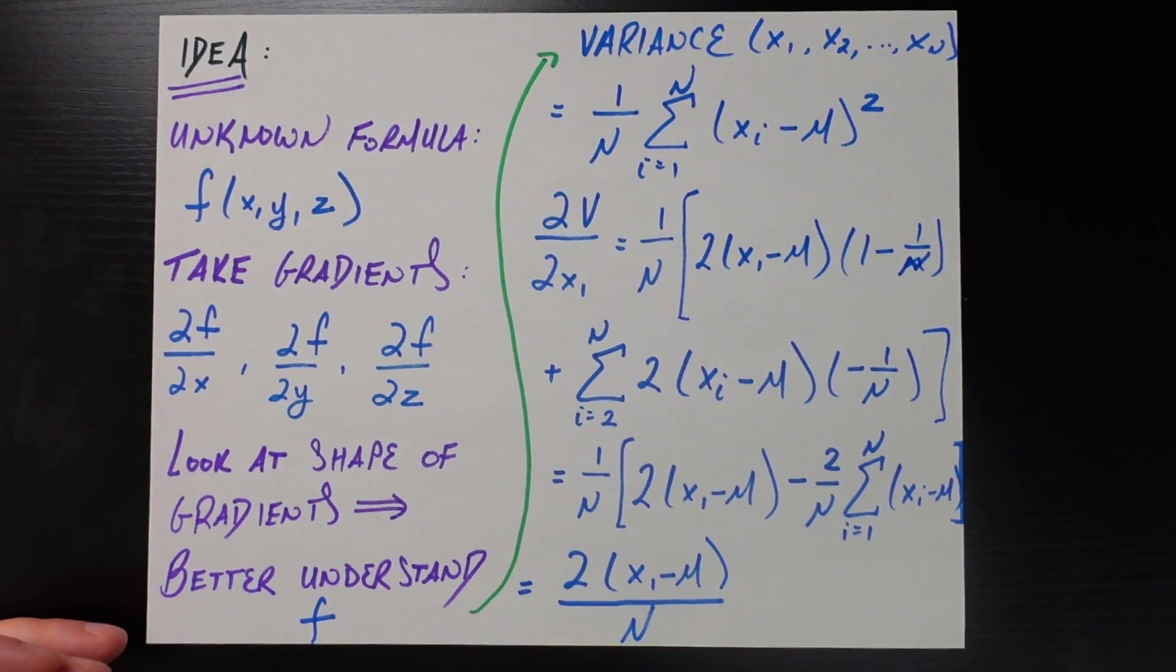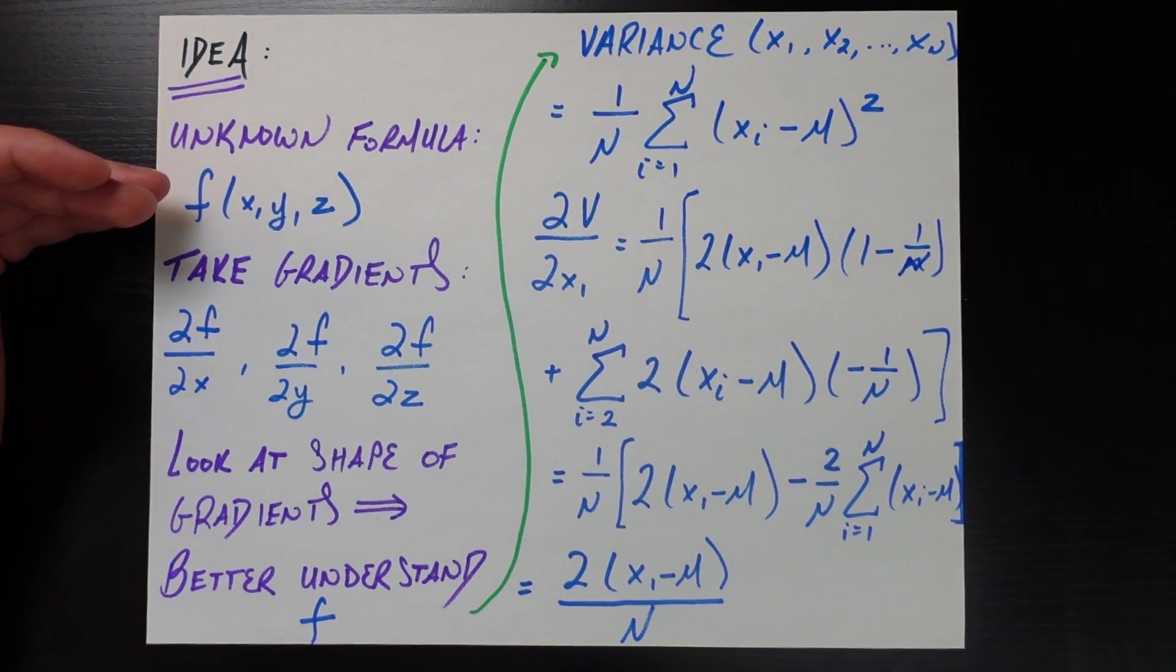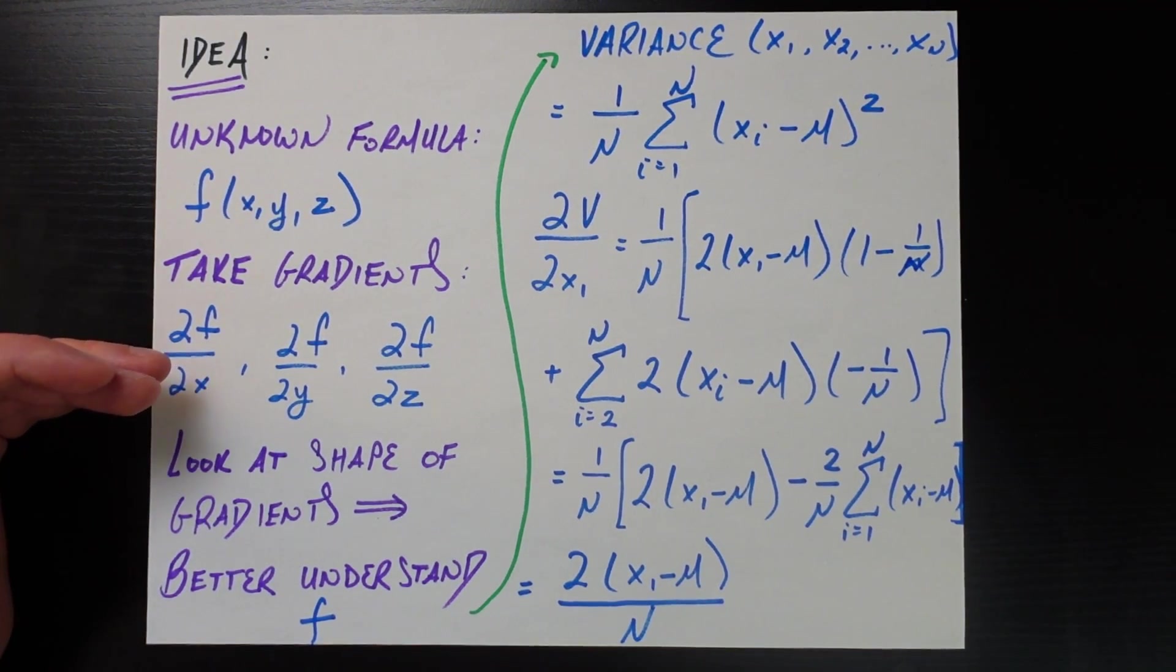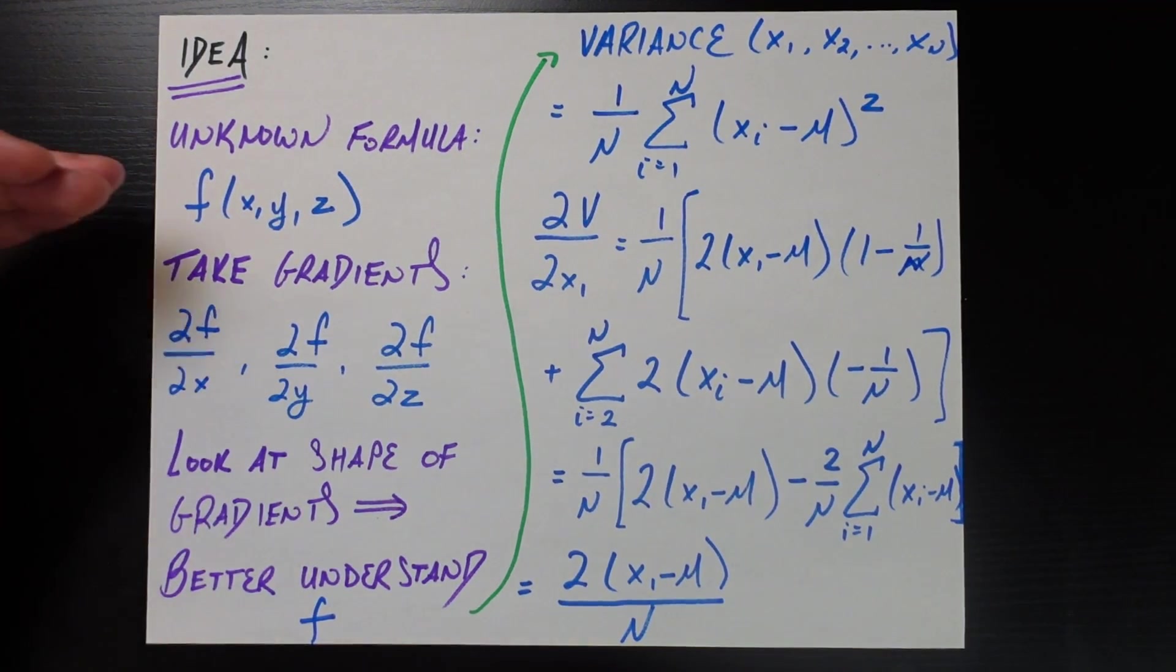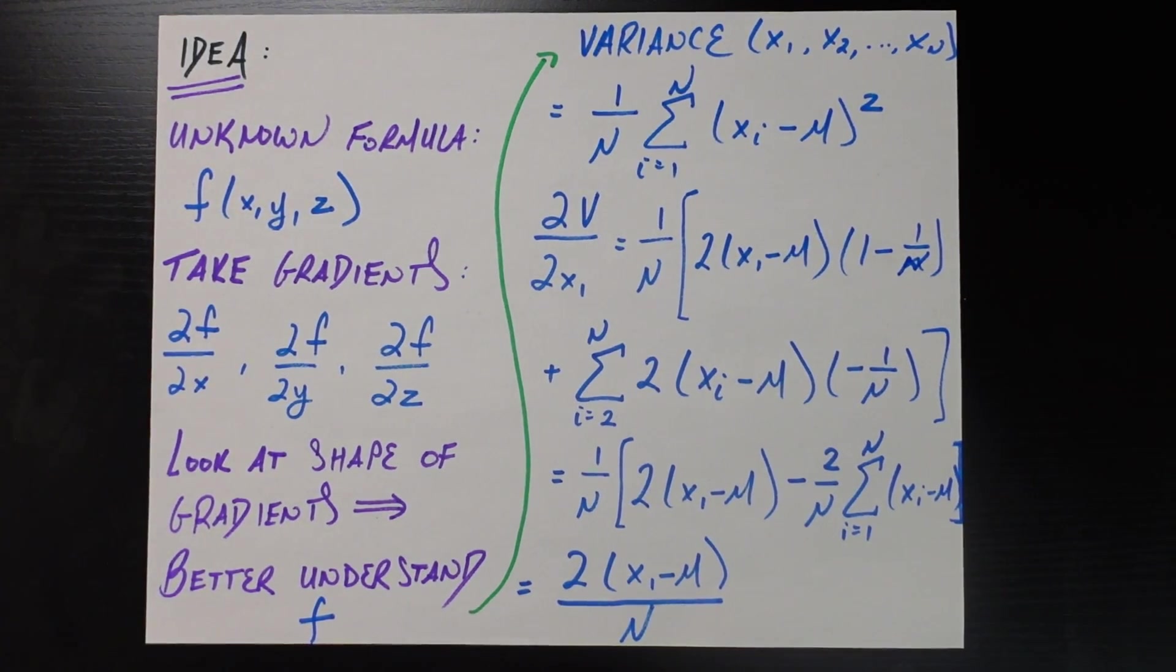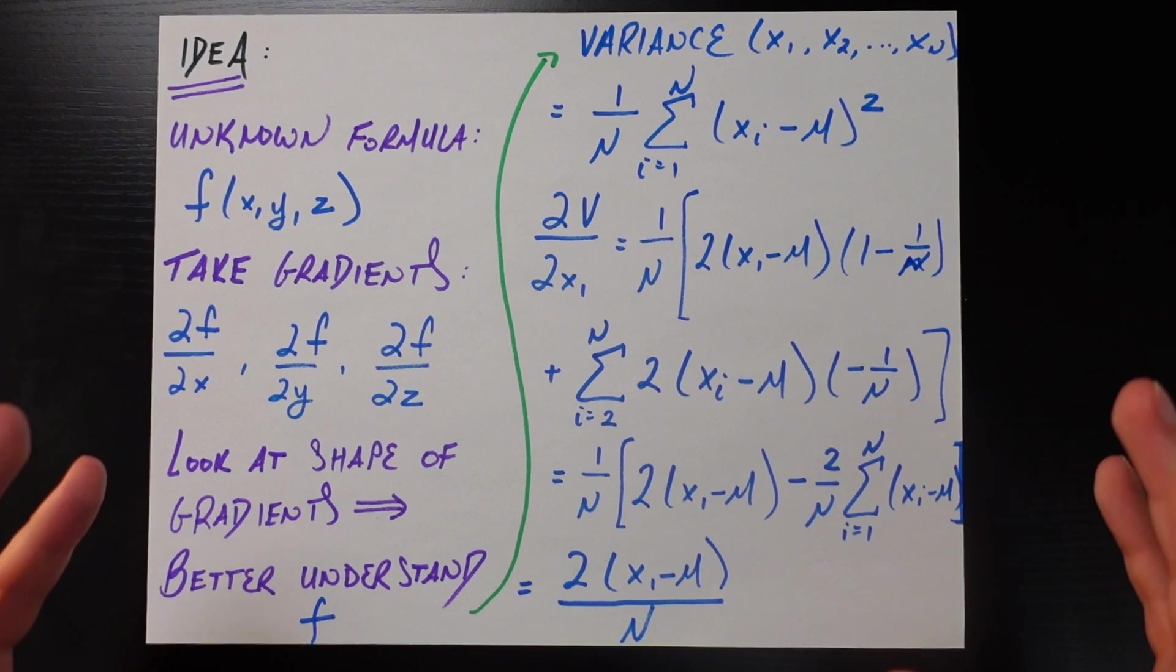So once you take the gradients, you're going to look at the shape, the overall trend of these gradients, and that's going to let us better understand the original function itself. And so the overall philosophy here is that I don't know what this is, or what it's trying to do with its arguments. Let me see how it responds to changes in those arguments. And by looking at how it responds to changes in those arguments, I understand better what the overall goal of the original thing was to begin with.